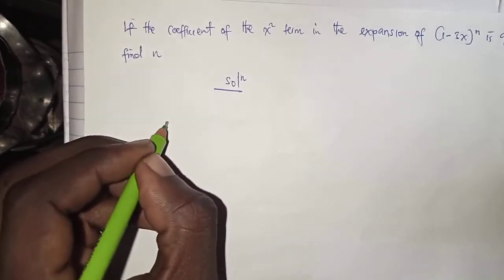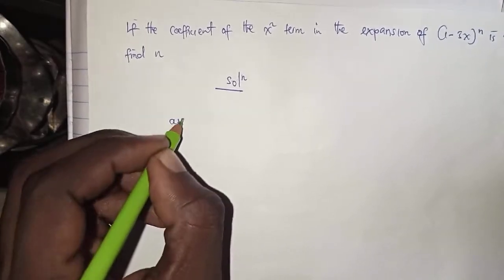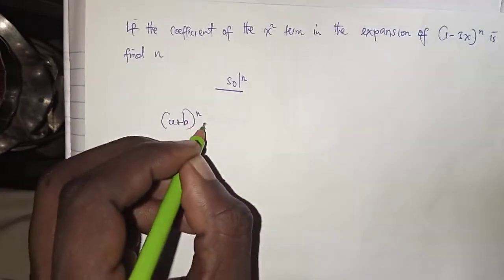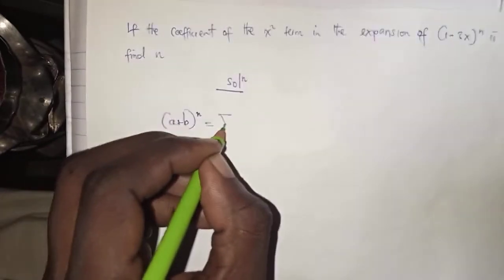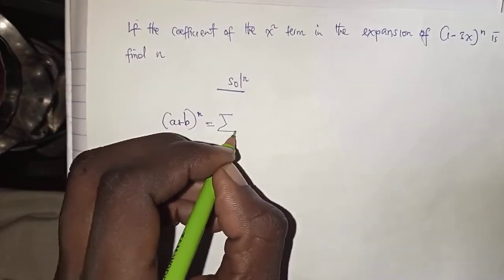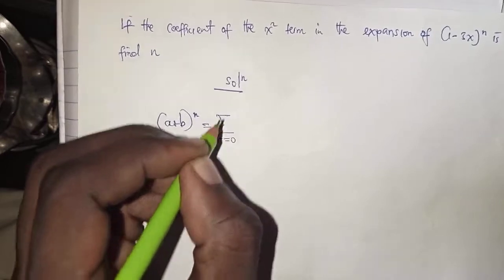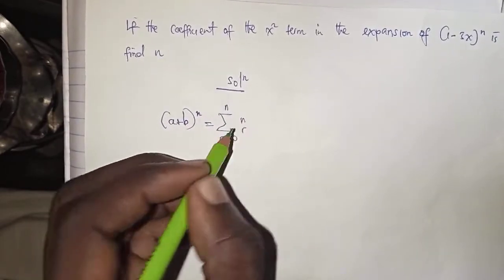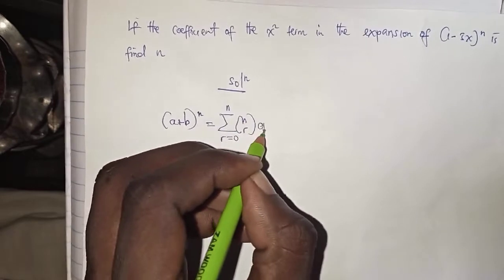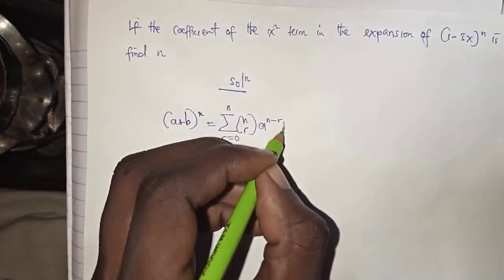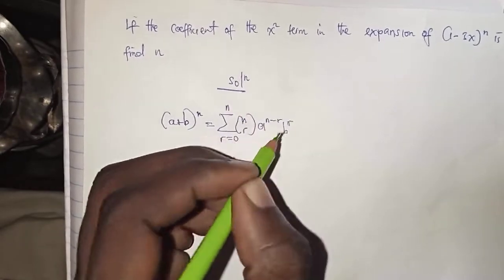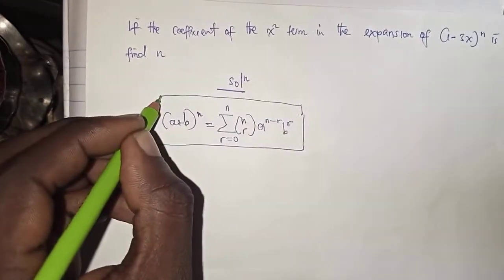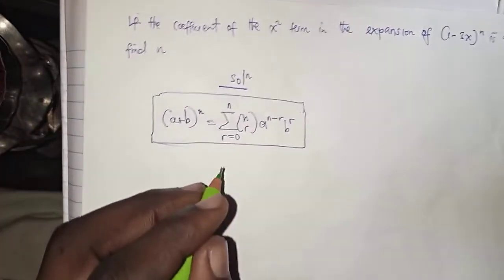The form of a binomial, which is (a + b) raised to the power n, is equal to the summation of r equal to 0 to n of n choose r, multiplied by a to the power n minus r, times b to the power r. That's our general formula for binomial expansion — the binomial theorem.